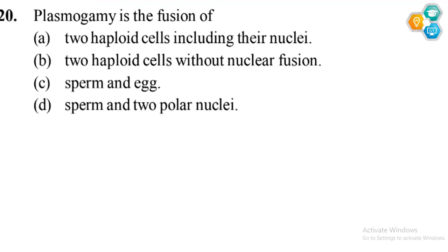Hello students, welcome to Entrance Test online platform. Now let's try to solve this question. The question says plasmogamy is the fusion of: option A, two haploid cells including their nuclei; option B, two haploid cells without nuclear fusion; option C, sperm and egg; option D, sperm and two polar nuclei. Now let's see, what is actually plasmogamy?